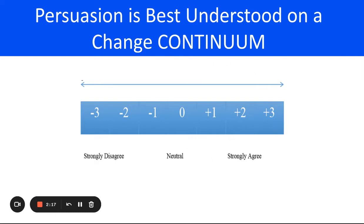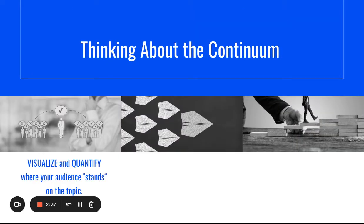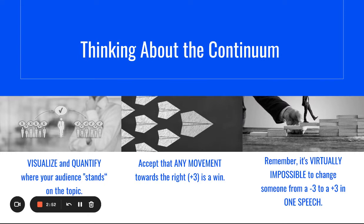Sometimes audience members just don't care about the topic — they're neutral, haven't thought about it, and don't have an opinion. Your goal is to get them to care and move into the agree range on the positive end of the continuum. Accept that any movement toward plus three is a win. It's virtually impossible to change someone from negative three to plus three in one speech, but if you can get them to consider your point of view and move a little toward the right, that's success.